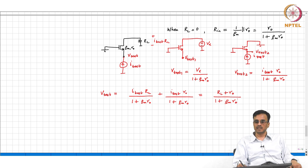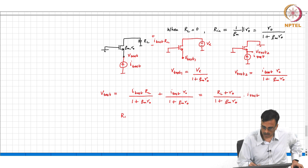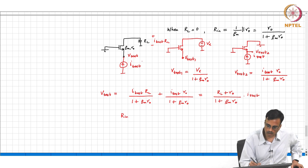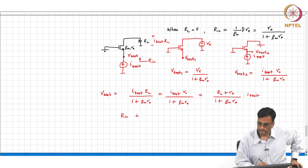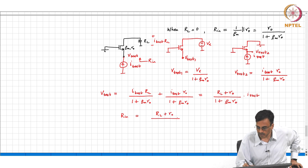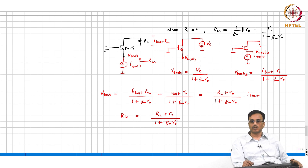Sanity check: when RL equals 0, we must get back the previous result. With RL equals 0, R_in equals Ro over 1 plus gm·Ro, which is 1/gm parallel Ro — and that is evidently true.